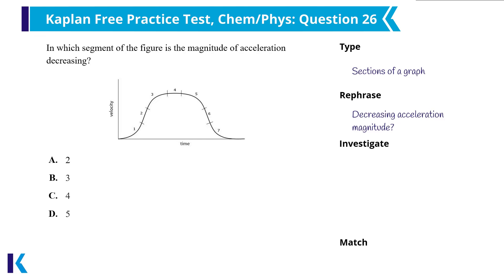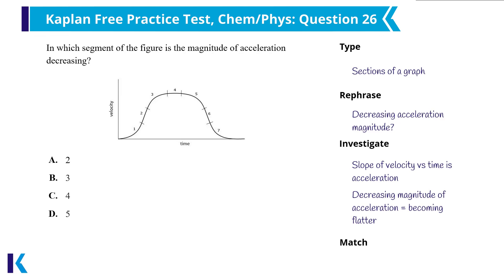For magnitude to decrease, that means the value is getting closer to zero, either from the negative or the positive side. On a velocity versus time graph, the slope of the line is the acceleration — similar to how on a distance versus time graph, the slope is velocity. Zero acceleration would be no slope, a flat section of the graph, and we want that acceleration to be approaching zero. So this question is asking for a section that has a slope that becomes flatter from beginning to end. This process of rephrasing the question and making a prediction makes evaluating the answers much clearer, making it much less likely that I miss a question I could have gotten right.